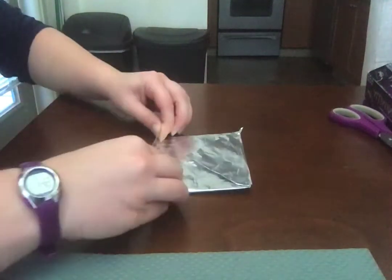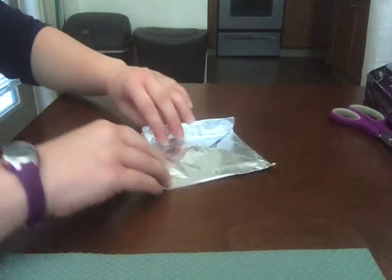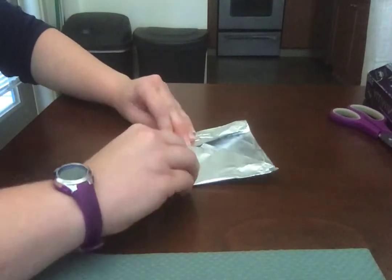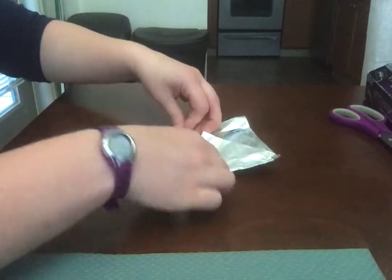And then you fold up the edges like so. These will be the sides of your boat. You don't want to fold them in, you just want to fold them up, make that crease.